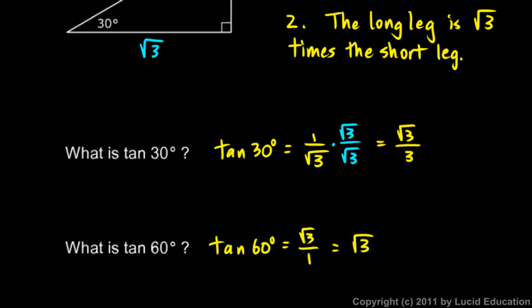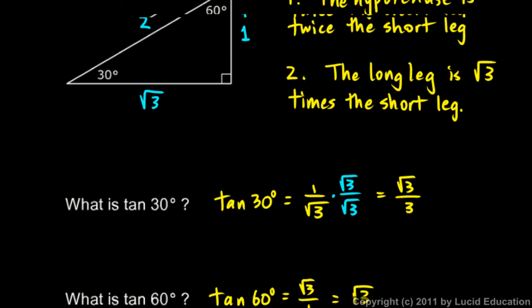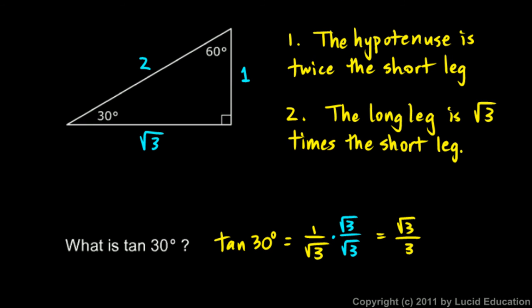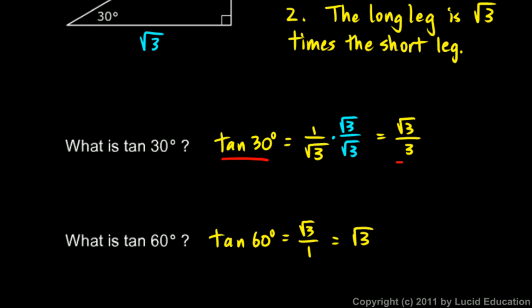You can memorize these facts — tan(30°) = √3/3 and tan(60°) = √3 — but it's better to be able to figure them out from the definition of the tangent function. If you ever need these values, you should be able to quickly compute opposite over adjacent and get the answers. You should also understand why these values must be correct, based on the definition: tangent is opposite over adjacent.